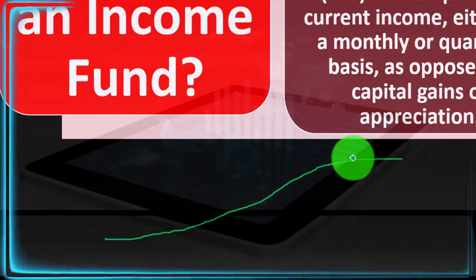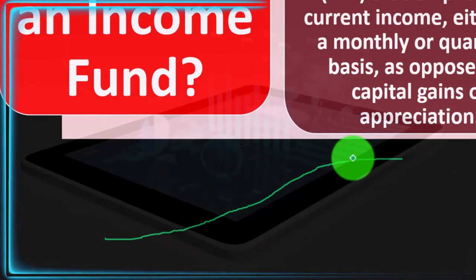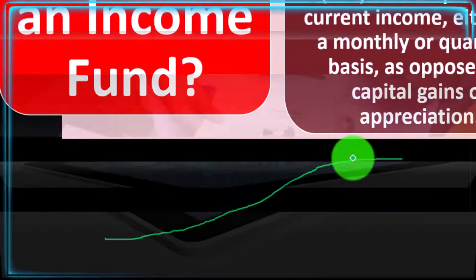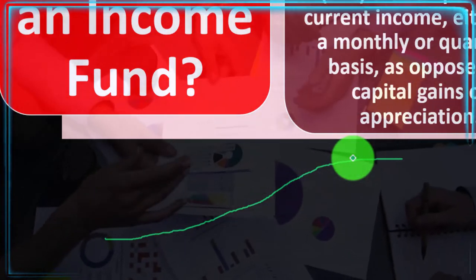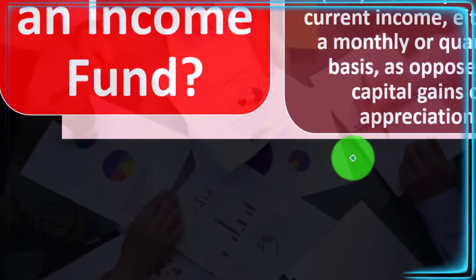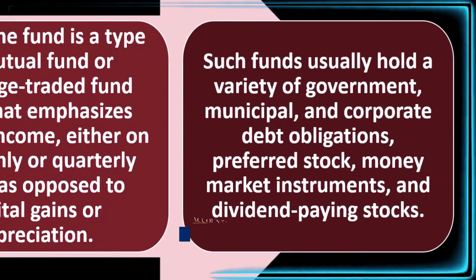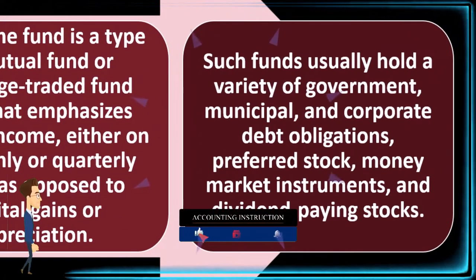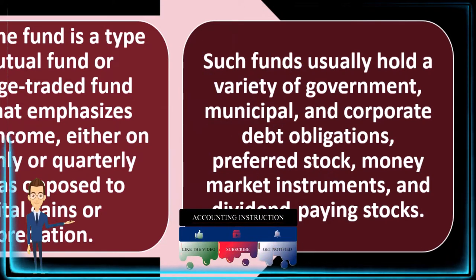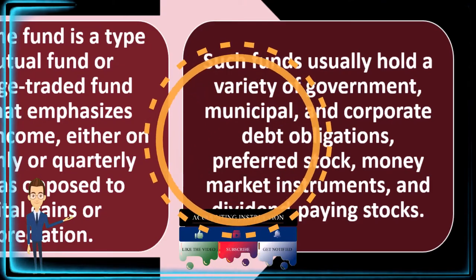Dividends to us as the owners would be the income, so that's the type of fund we're looking at. Usually these are the kinds of funds we want to be more heavily weighted towards when we're closer to our end goal — say retirement — because we might be living off the income of the income fund. Such funds usually hold a variety of government, municipal, and corporate debt obligations, preferred stock, money market instruments, and dividend-paying stocks.